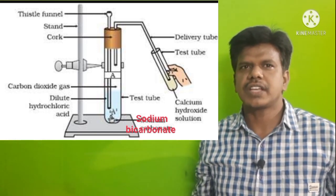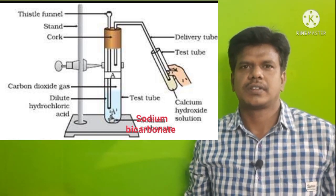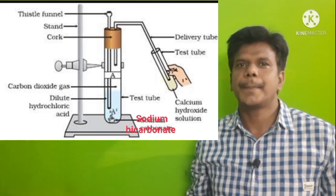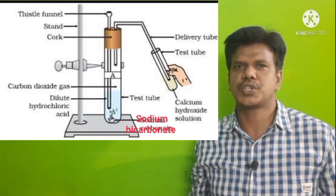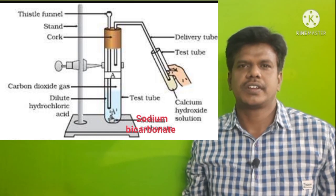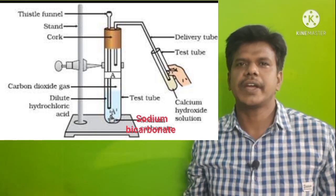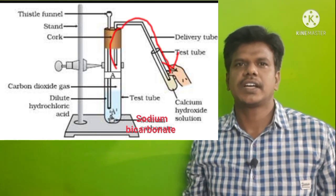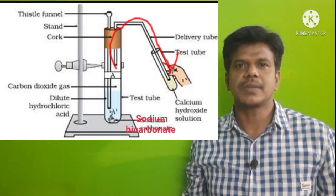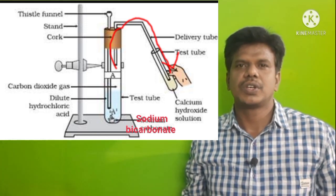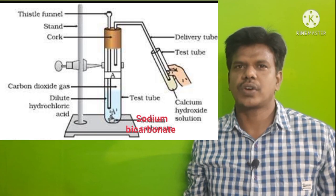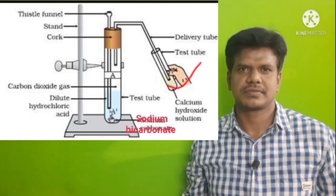In the same way, take test tube B and arrange the apparatus as shown in the figure. Add 2 ml of HCl solution to the sodium bicarbonate in the test tube. Bubbles will come out, and we allow that gas to pass through the other test tube containing calcium hydroxide. The calcium hydroxide turns milky white, showing the same reaction occurs.